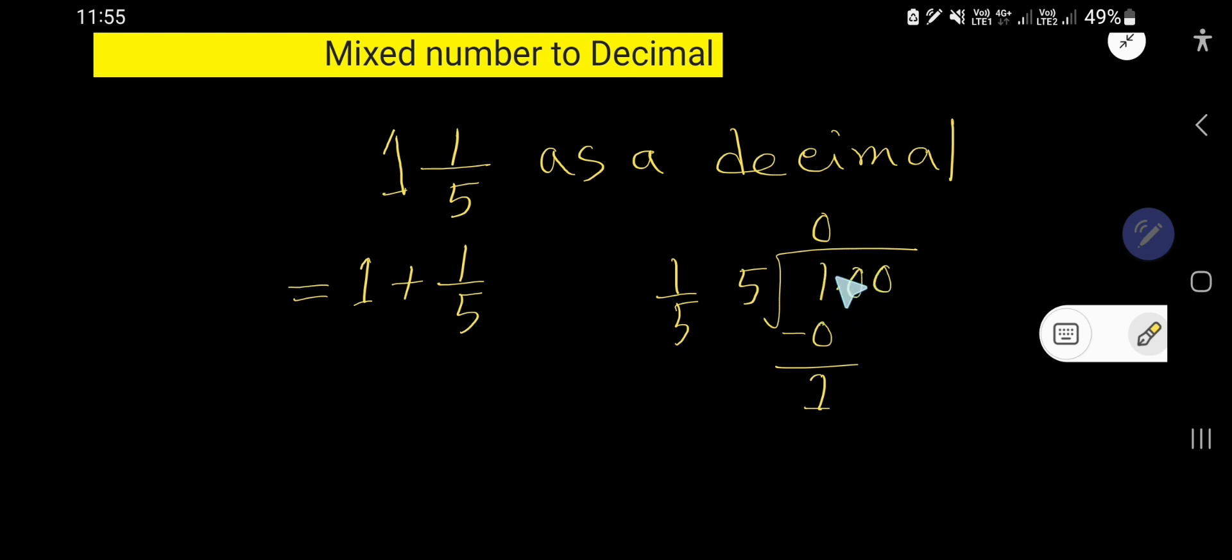Now bring down the first zero. Five goes into ten how many times? Two times. But here you have to place the two here.